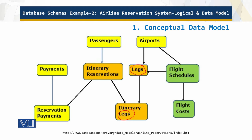A leg is the flight that maintains the same flight number and aircraft throughout its journey from one airport to another. So we have airport A1, airport A2, and airport A3 — the flight goes from one to the next and they share the same leg. An airport has these legs and also has flight schedules, and associated with the flight schedules are the flight costs. As discussed in the previous module, costing depends on how far in advance the reservation was made, the duration of the stay, the class of the passenger, and so on.